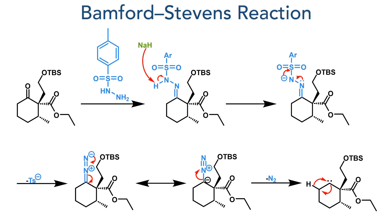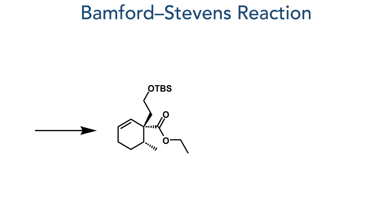Taking this forward, the ketone then took part in a Bamford-Stevens reaction. Tosylhydrazide first reacts with the ketone to form a tosylhydrazone. This is then deprotonated by sodium hydride and a tosyl anion is eliminated. The resulting diazo compound then eliminates nitrogen gas, forming a carbene that can undergo a 1,2-hydride shift to form the target alkene.